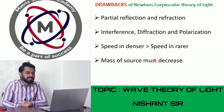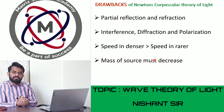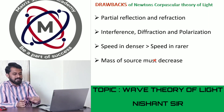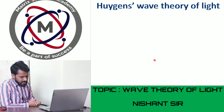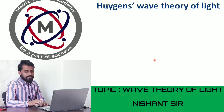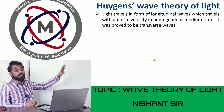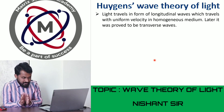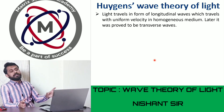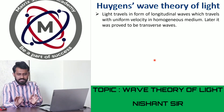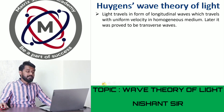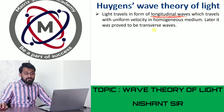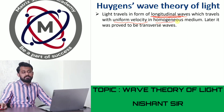Now we move to the main part of this lesson: Huygens' wave theory of light. According to Huygens, the first point is that light travels in the form of longitudinal waves which travel with a uniform velocity in a homogeneous medium. A homogeneous medium is one having a single phase - for example, pure water or pure glass with no abrupt or gradual changes. It was later proved that light is actually a transverse wave, not longitudinal.